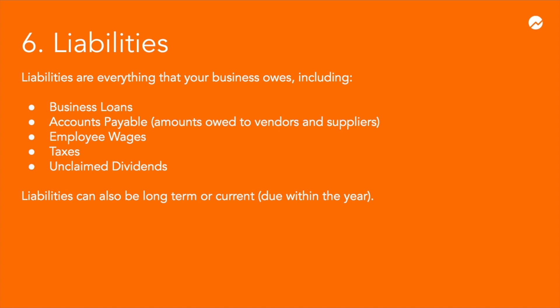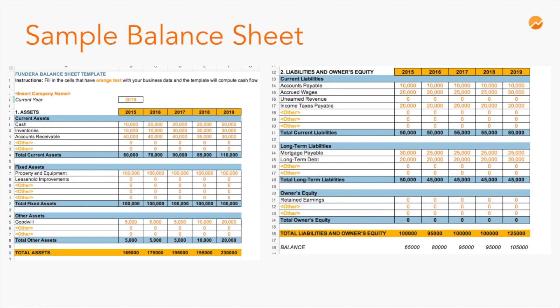Current liabilities are due within the year. Both assets and liabilities are recorded on a financial statement called the balance sheet. Here's a sample balance sheet showing a company's breakdown of assets and liabilities over a five-year period. You'll see that this company's asset position has improved over time. The total liabilities have also increased of late, but this is balanced by a significant increase in assets in 2019. This company has more assets than liabilities, which is a good sign.